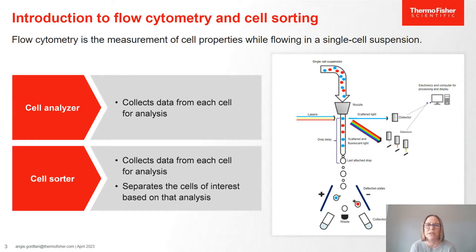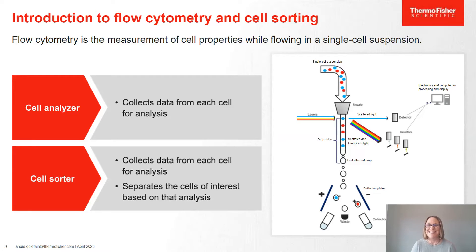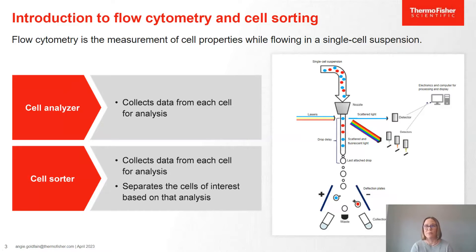Flow cytometry is the measurement of cell properties while flowing in a single cell suspension, and that single cell suspension is really key. A cell analyzer collects data from each cell for analysis only, whereas a cell sorter does that and takes it to the next level, letting you separate the cells of interest based on that analysis. This starts with a single cell suspension, which is focused into a stream and then interrogated by one or more laser beams. The single cell suspension is in a carrier fluid called the sheath, which presents the cell to the interrogation point where the lasers hit the cells. From there, we collect light coming from each cell, separate by wavelength, and digitize for processing and display to the user.